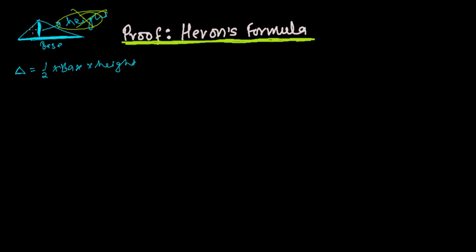In the case where we are not given the height, and we are only given the three sides — this side, this side, and this side — how do we find the area of the triangle? That's what we're going to find out. This formula is called Heron's formula, discovered by a great mathematician, Heron of Alexandria.